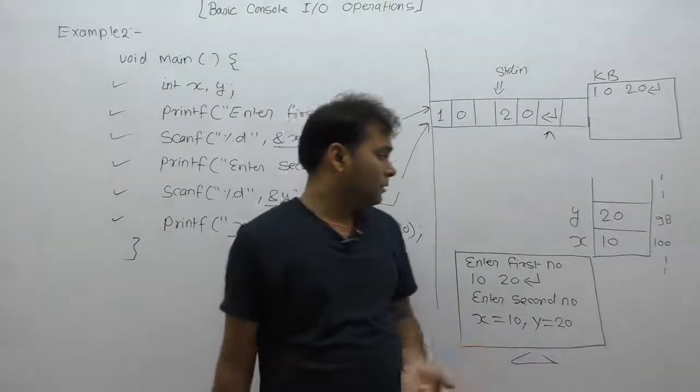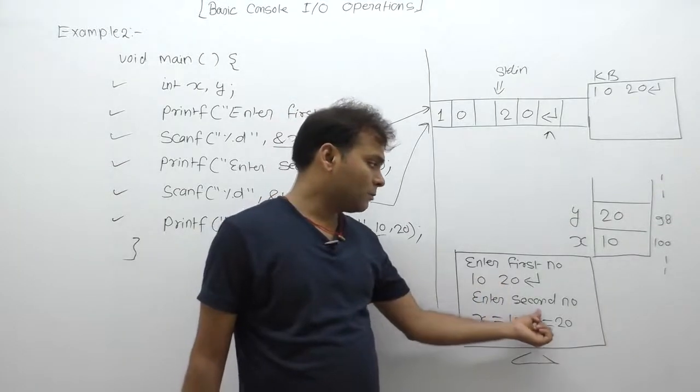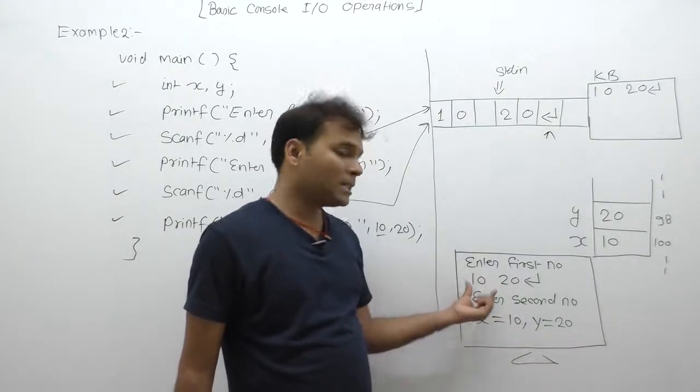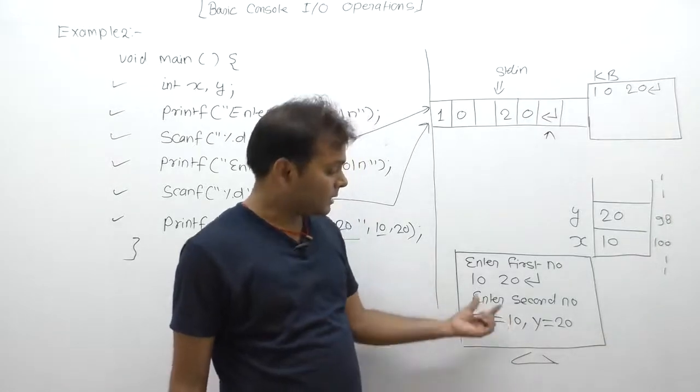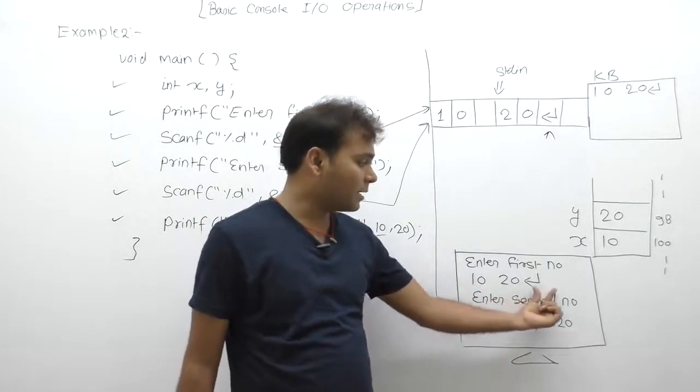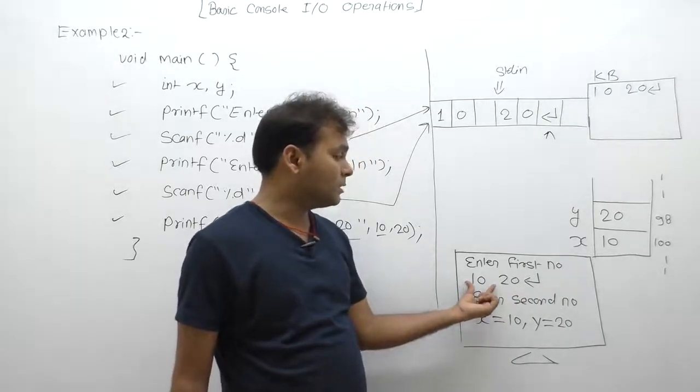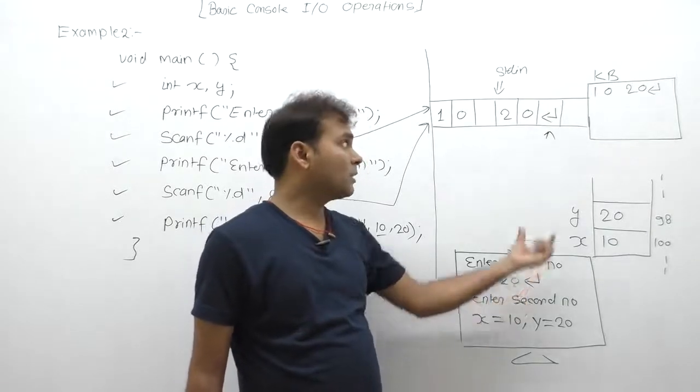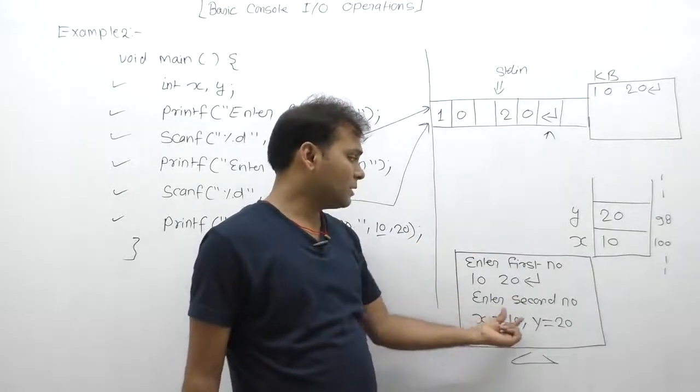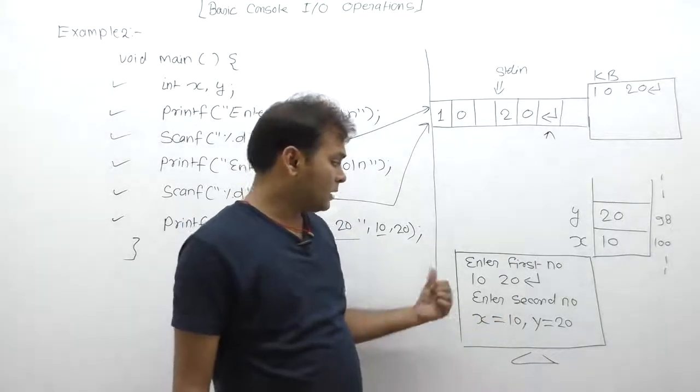As we know, sequentially one by one number read kar raha hai. In this case, two one by one. First time me press karna tha only single number, next time another number. In my first case maine dono number put kar diya, ek saath number put kar diya. In this case, first input ke case me scanf ne read kiya only first number. Second number abhi tak unread character found inside buffer.